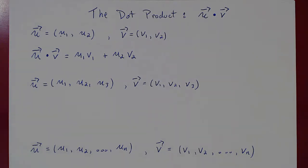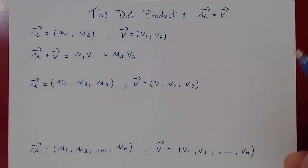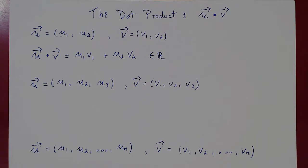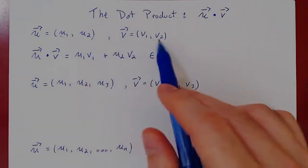We multiply corresponding entries and we add them up. Doesn't that vaguely sound like matrix multiplication? How do we multiply a row times a column? We multiply corresponding entries and we add them up. This is what the dot product is. This is a purely algebraic operation on vectors, and of course the result is a real number. What's neat is this is really just matrix multiplication — multiply corresponding entries and add them up.